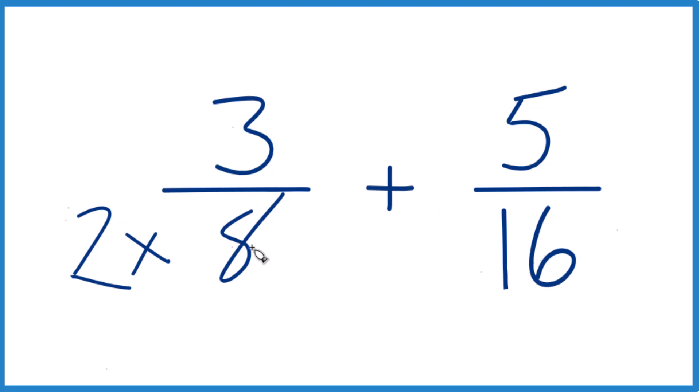But we can't just multiply the denominator by a number. We need to multiply the numerator by that same number. Because here, 2 over 2, it's just 1.